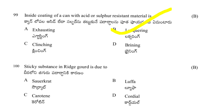The sticky substance in ridge gourd is due to: sourcat, luffa, carotene, or cordial. The answer is B — luffa. The scientific name of ridge gourd is Luffa cylindrica, and it contains luffa as a sticky substance.